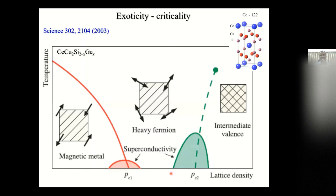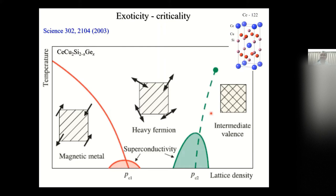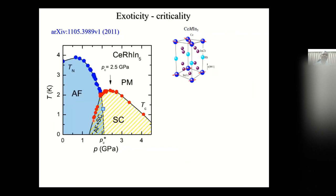At very high pressure, the cerium 4f electrons hybridize much more strongly with the conduction electrons, and at some point the cerium 4f no longer behaves like a local moment — it gives extended states or energy bands, and there is a volume collapse. The crystal structure is protected, but there is a sudden change in volume. These two phases are separated by a phase line, and superconductivity can also appear around this critical point, known as the intermediate valence state — well-known for many years, published around 2003.